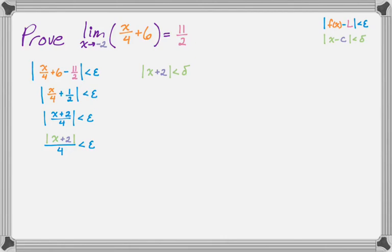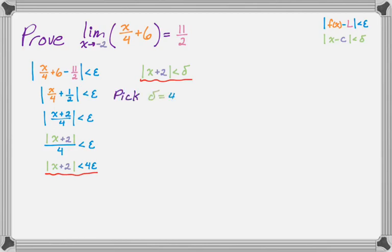The absolute value of x plus 2 is now the absolute value from our delta inequality, so we're almost there. This gives us that the absolute value of x plus 2 is less than 4 epsilon. Comparing the two inequalities, I can say that delta equals 4 epsilon. With that relationship found, I'm ready to write the proof.